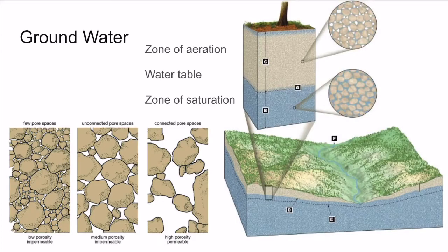We'll now talk about groundwater. We need to know a few key terms. First is permeability — this refers to how easily water can flow through a material. Water can easily flow through materials like limestone, sandstone, gravel, sand, and soil, since the spaces between particles are connected, giving water a continuous path to flow. However, things like asphalt or concrete are impermeable — water cannot penetrate through them, so it flows on top.